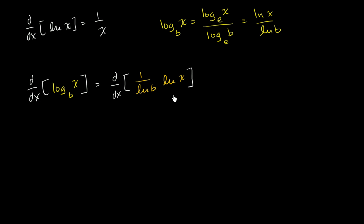And now this becomes pretty straightforward because what we have right here, 1 over the natural log of b, this is just a constant that's multiplying the natural log of x. So we could take it out of the derivative. So this is the same thing as 1 over the natural log of b times the derivative with respect to x of the natural log of x.